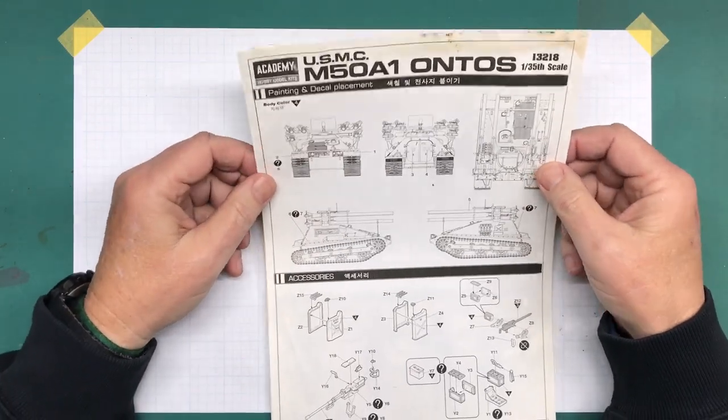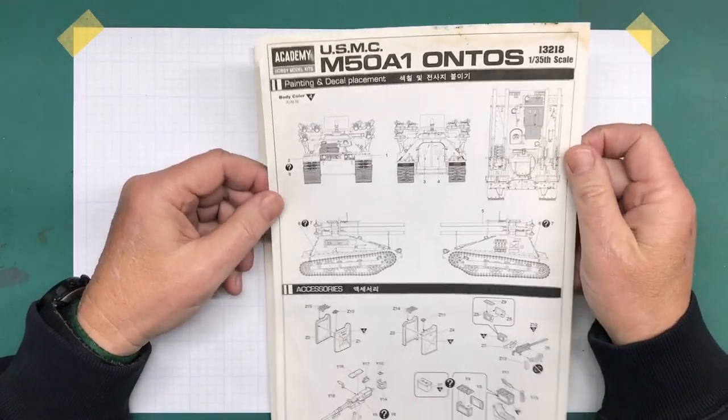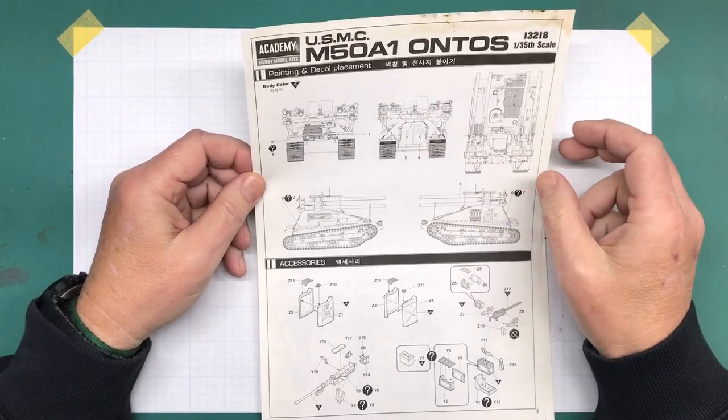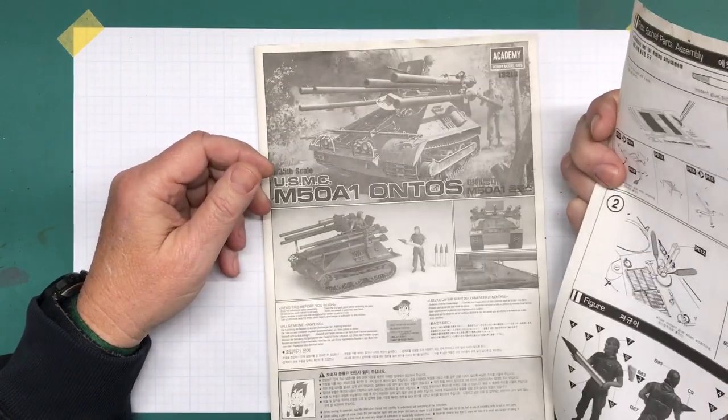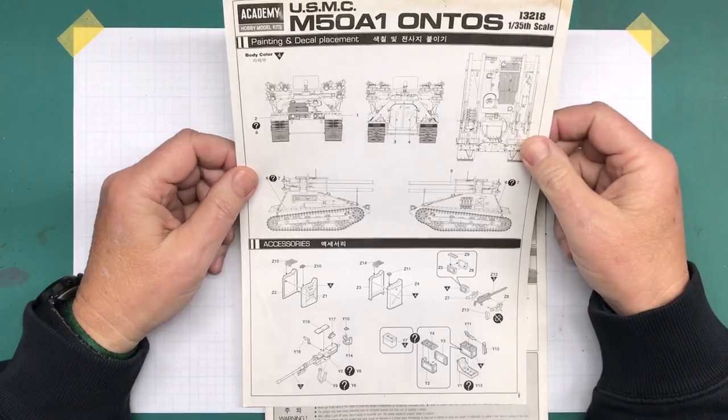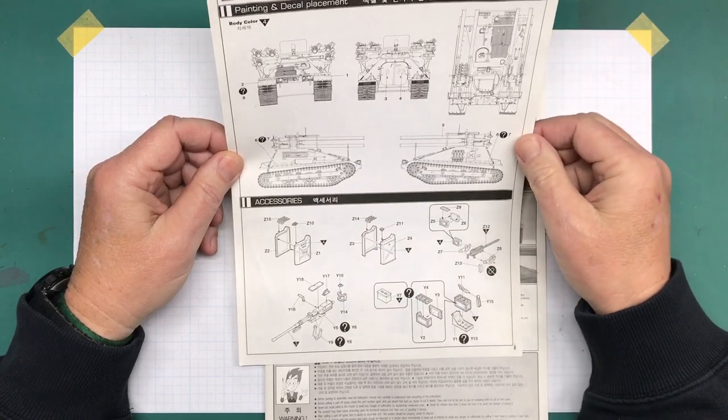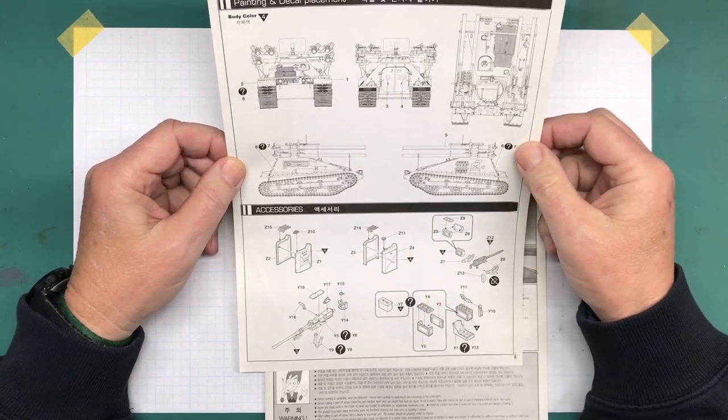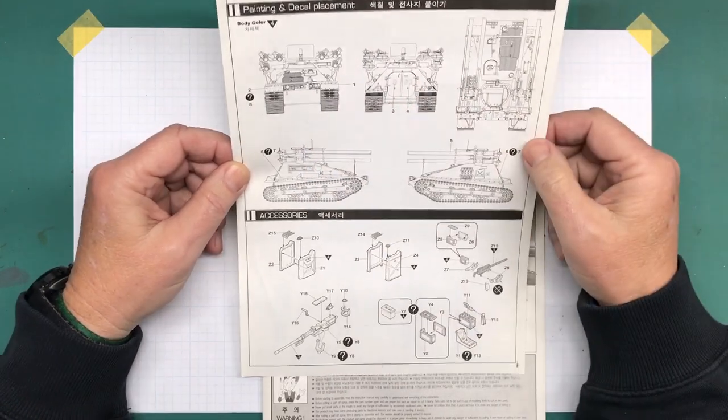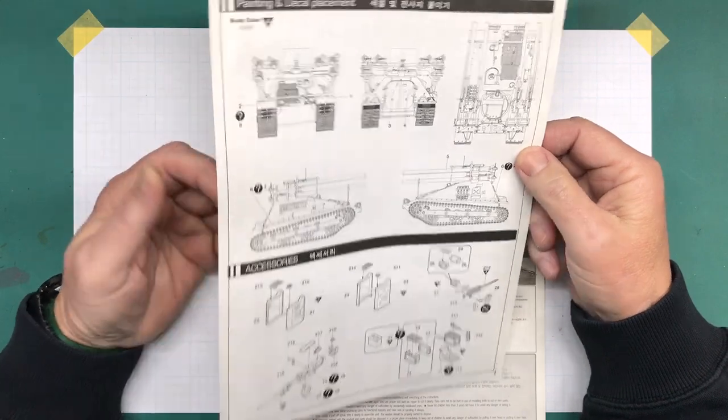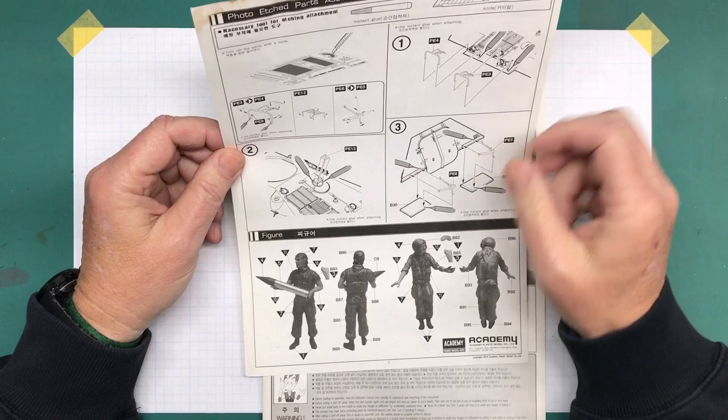Then we have this warning and assembly of model kits. I'm assuming this is Korean and English, and then we have what looks like French, German, Japanese, and Chinese. Then we have the marking options, and on this side we have painting and decal placement. Body color 4, which we'll look at in a minute. I'm sure it's on the instructions. Then it shows the accessories, how to assemble those. Nice side profile, upper front and back.